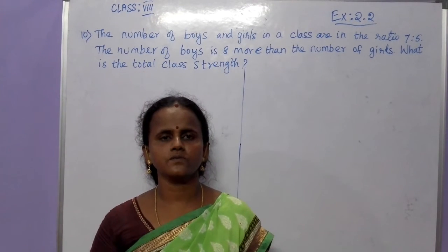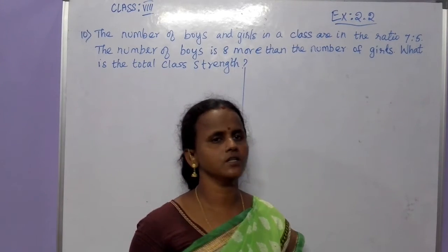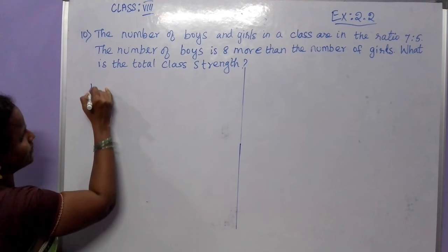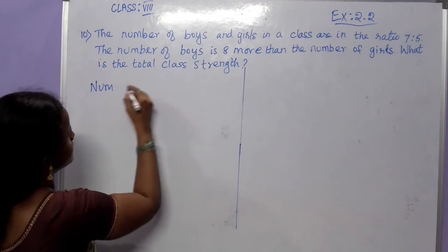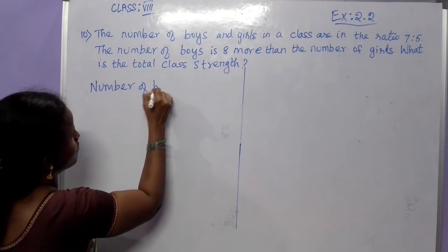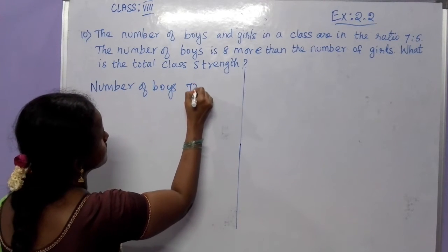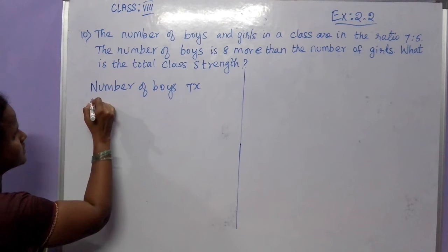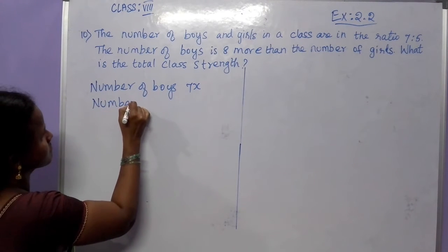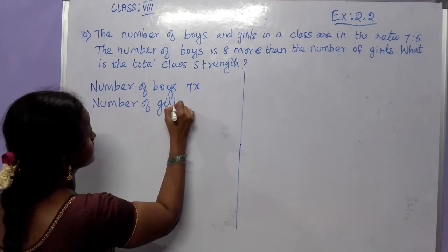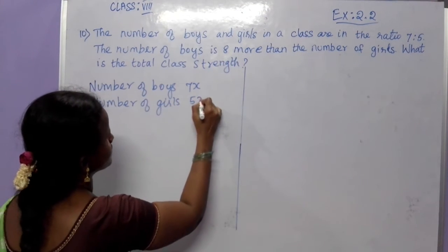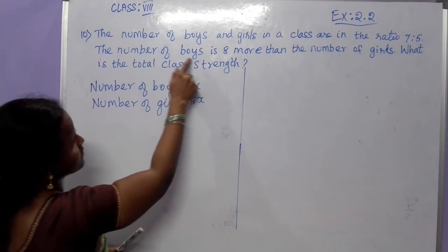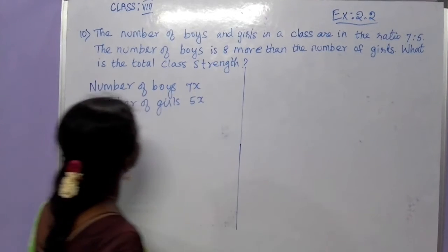As we have seen in previous sums, in this ratio the first number represents the number of boys. What is given? Number of boys is 7, because they have given 7 here. Next, the number of girls is 5. Also, the number of boys is 8 more than the number of girls.